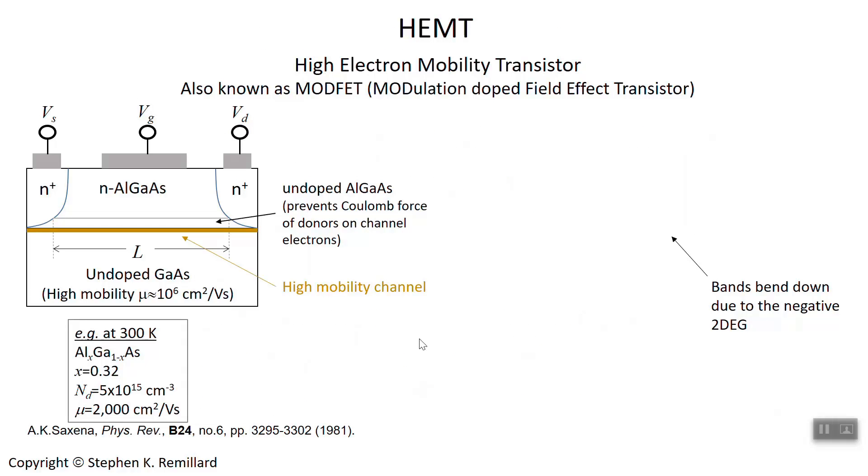Let's look at another field effect transistor, which is the MODFET, or the high electron mobility transistor. Modulation doping means that you deliberately have regions with different levels of doping. In the simplest case, high doping and no doping. Now, you have a substrate of gallium arsenide, again chosen as the working material because of the high mobility, but now we're going to make a heterostructure, and that's what's unique about HEMT compared to MESFETs and MOSFETs.